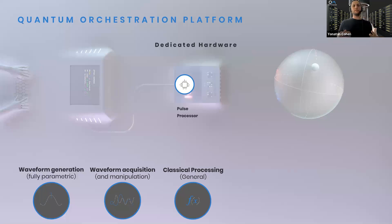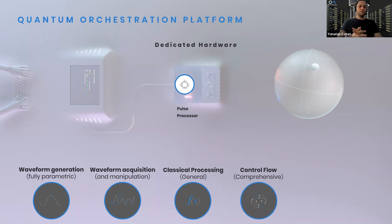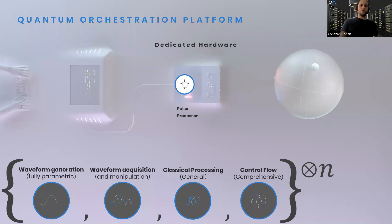The instruction set combines four elements essential for every quantum control sequence. First, waveform generation — generating the waveforms sent to the device as control operations. Second, waveform acquisition — the measurements we perform and how we analyze and process them. Third, general classical processing embedded in real time while running the sequence, whether for looping over parameters, real-time Bayesian estimations, or quantum error correction. Fourth, control flow — branching of the program, if-else statements, loops, etc.